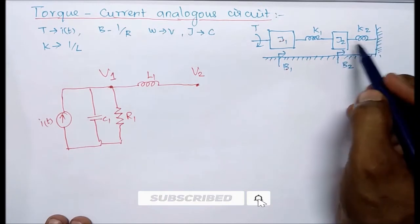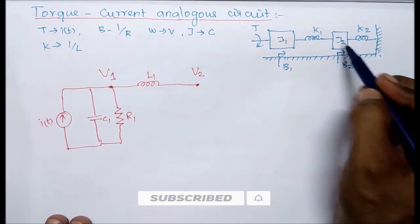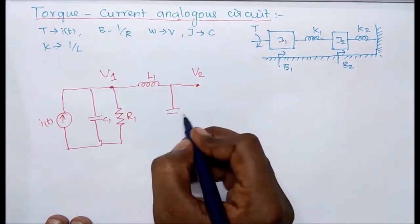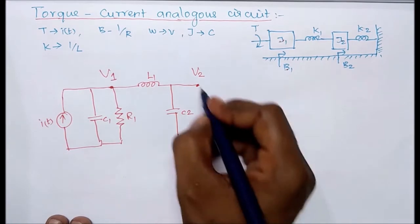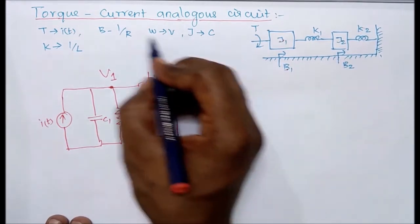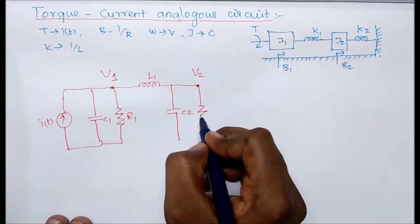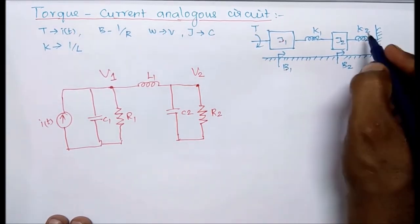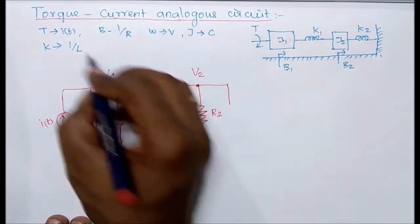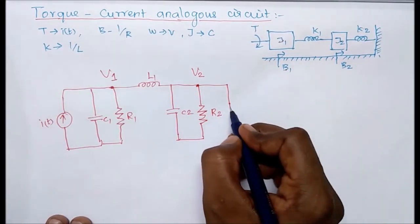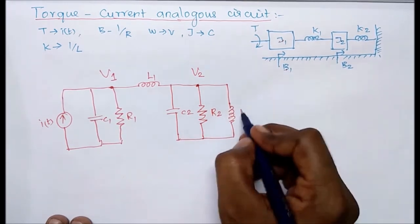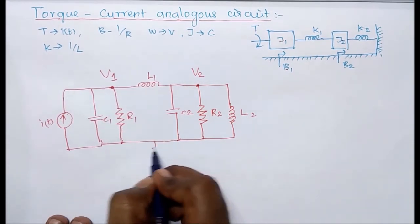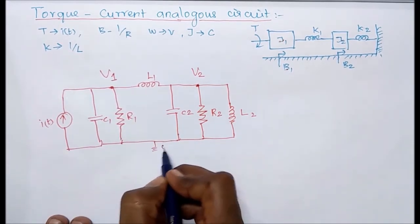For node two, there are three elements: J2, K2, and B2. For J2, the equivalent is capacitor, so we use C2. For B2, its equivalent is one-over-resistor, but in the electrical circuit we use R directly, so R2. For K (spring), the equivalent is inductor, so we use L2. The bottom node can be considered the reference node with potential zero volts.